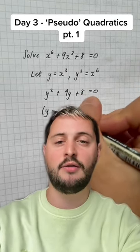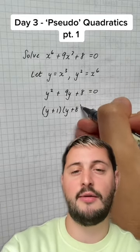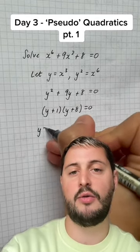That means we can rewrite the equation as y squared plus 9y plus 8. That's a normal quadratic, so we can just factorise this as usual, y plus 1, y plus 8.